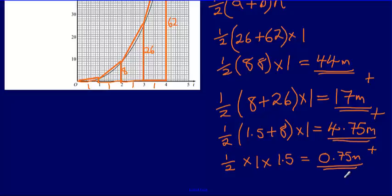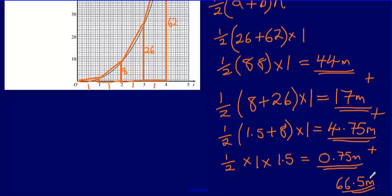All that's left is to add all these distances together: 0.75 plus 4.75 plus 17 plus 44 gives 66.5 metres. So the total distance travelled between 0 and 4 seconds is the area underneath the graph. We've estimated that by drawing trapeziums underneath the curved graph, and the approximate answer is 66.5 metres.